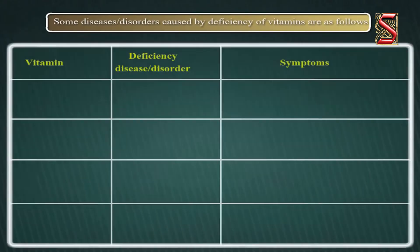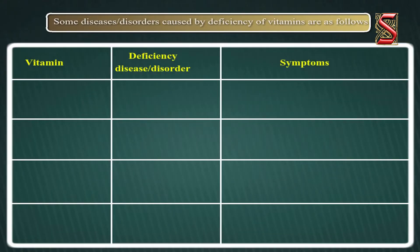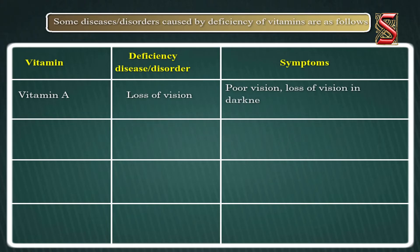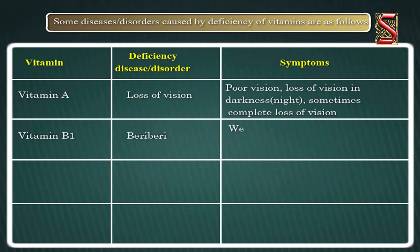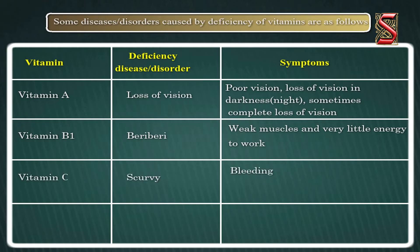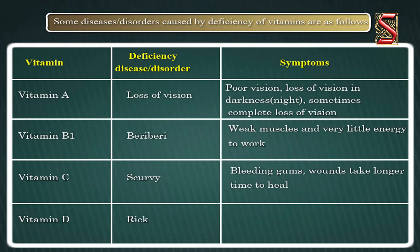Some diseases or disorders caused by a deficiency of vitamins are as follows: Vitamin A — poor vision and loss of vision in darkness (night blindness), sometimes complete loss of vision. Vitamin B1 — Beriberi, with weak muscles and very little energy to work. Vitamin C — Scurvy, with bleeding gums and wounds taking longer to heal. Vitamin D — Rickets, where bones become soft and bent.